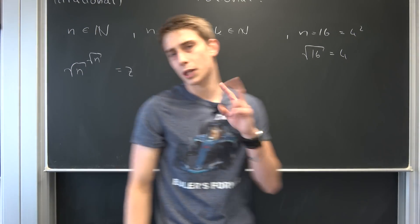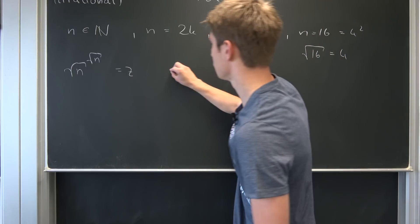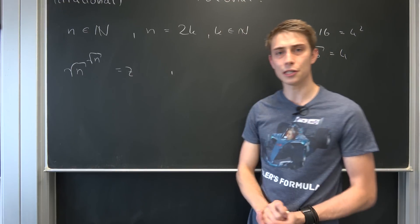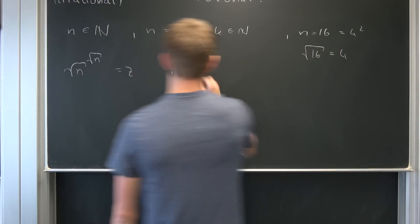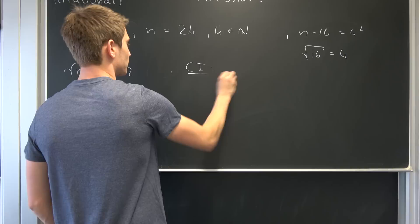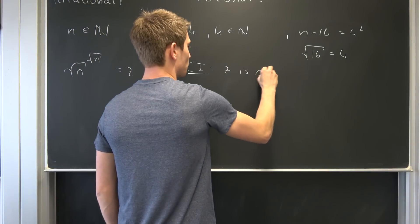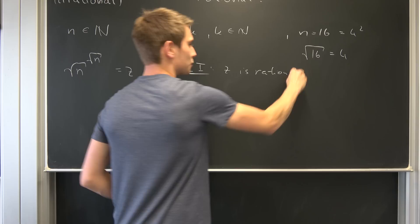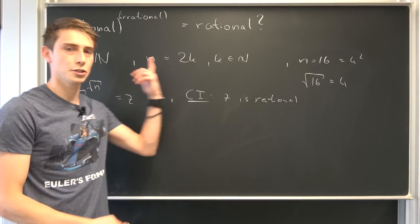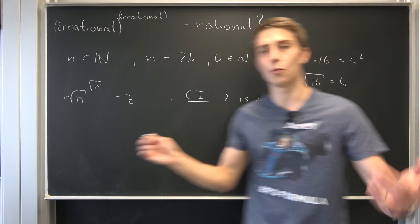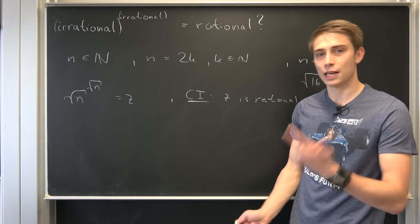And we can have two cases now. Either this is already rational. So case one: z is rational. Well, that means that we are already done, because irrational to the power of irrational would be rational in this case. But we can have a second case.